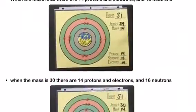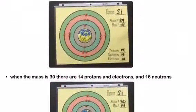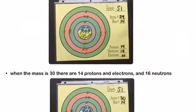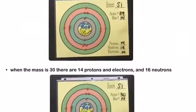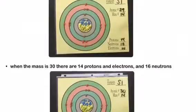When the mass is 29, there are 14 protons and electrons and 15 neutrons. When the mass is 30, there are 14 protons and electrons and 16 neutrons.